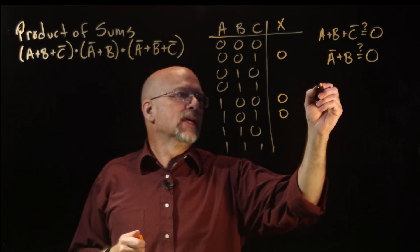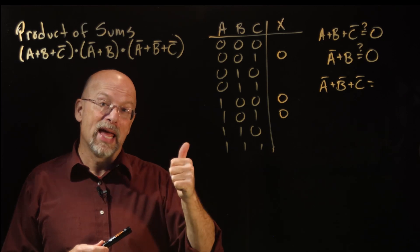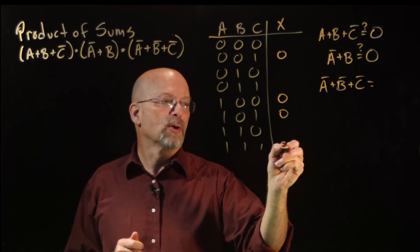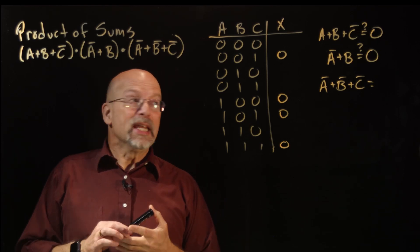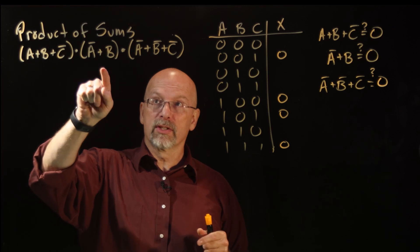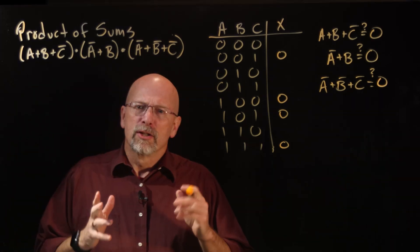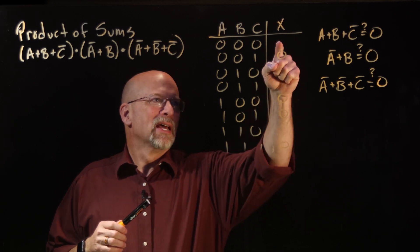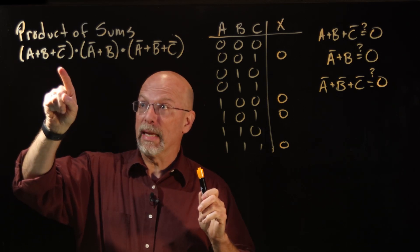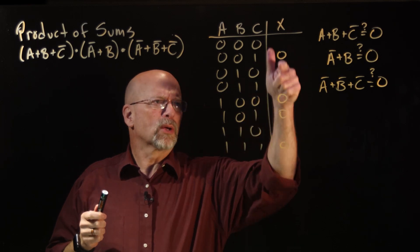When is Ā or B̄ or C̄ equal to zero? It's equal to zero when Ā is zero, B̄ is zero, and C̄ is zero — which means A is one, B is one, and C is one. That gives us a zero right there. Now we know this product of sums expression is going to output a zero if this sum is zero, or this sum is zero, or this sum is zero — that's how the AND works. If there's a zero to any of its inputs, we output a zero. So what do we do with the remaining blank spots? What do the sums A or B or C̄, Ā or B, and Ā or B̄ or C̄ equal in those spots?